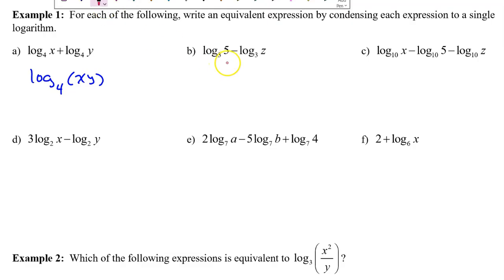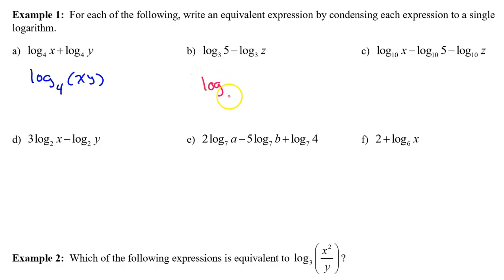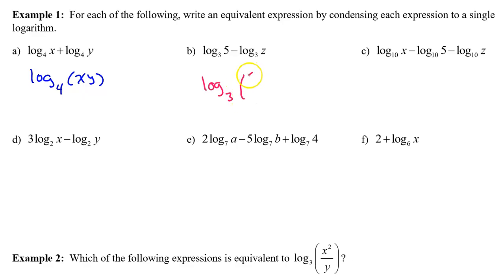For part b, we have the difference of two logs. We can write this as the single log of a quotient. It's going to be the first number divided by the second number. So this would be the same as the log base 3 of 5 over z.